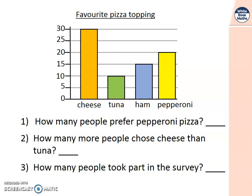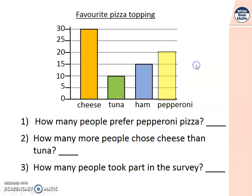We can see from the title that it's about somebody's favourite pizza topping - they've asked lots of people what type of pizza they like. Number one: how many people prefer pepperoni pizza? Which bar shows you pepperoni? That's right, the yellow bar. Let's follow it up and across - and can you see it goes to 20? So the answer is 20 people prefer pepperoni pizza.